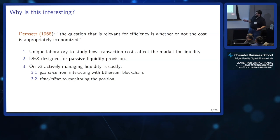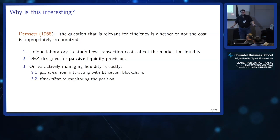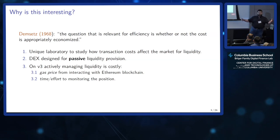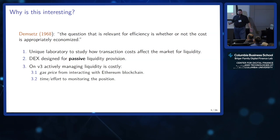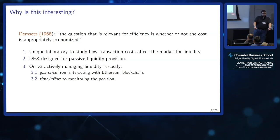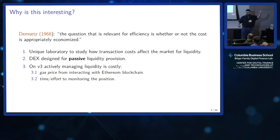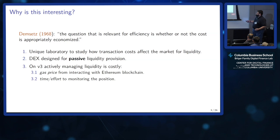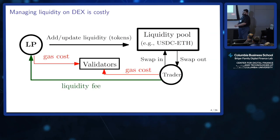This changed a couple of years back when Uniswap moved to V3, where you can set a price range for your position and managing liquidity has become costly. One explicit cost for actively managing your position is the gas price you have to pay every time you interact with Ethereum, even layer-two chains. A second, more subtle cost: these markets were designed for retail liquidity providers who are not professional, so there are fixed costs in terms of the time to monitor, the effort, and the steep learning curve.